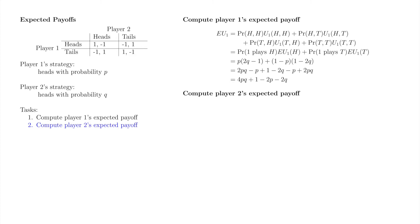Now we'll repeat the same exercise for player two. There are four possible outcomes, the same outcomes we listed when we computed player one's expected payoff. However, the payoffs from these outcomes are now player two's payoffs rather than player one's payoffs.